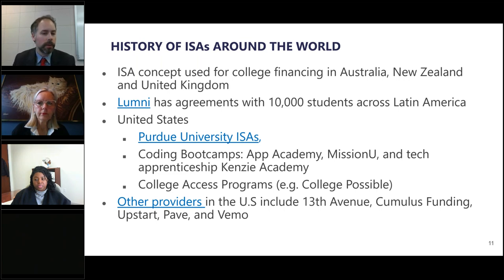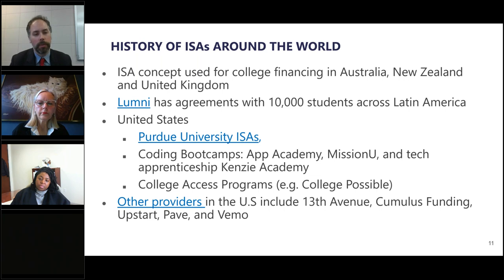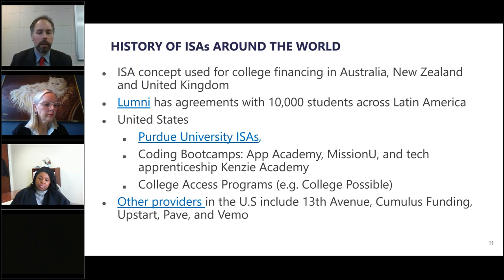There has also been a tremendous amount of activity in the workforce sector, with short-term coding bootcamps implementing ISA models — sometimes completely in lieu of tuition. Better Future Forward is a nonprofit with a specific focus on low-income populations, working with college access programs to provide pathways within communities to help students get a college degree. There are certainly other providers in the space as well — Vemo is one that worked with Purdue to build their program and that Colorado Mountain College has also engaged with.